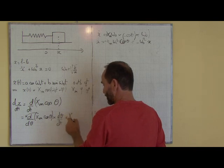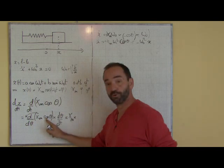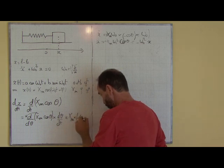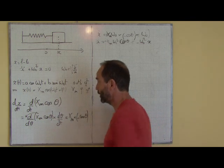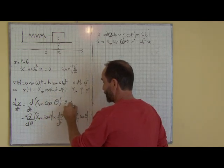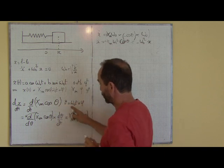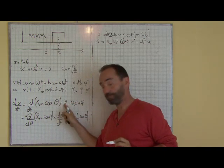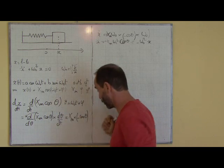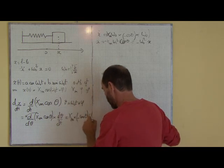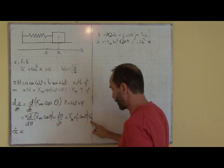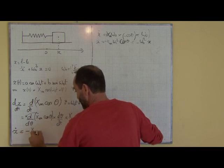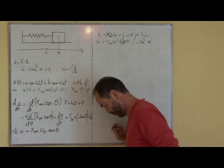La dérivée de cos(θ) par rapport à θ est moins sin(θ), donc on obtient xₘ·(−sin(θ))·θ̇. La dérivée de θ par rapport au temps : θ = ω₀t + φ, ω₀ et φ étant des constantes. Je dérive θ par rapport au temps, je retrouve ω₀. Donc ẋ = −xₘ·ω₀·sin(θ), θ valant ω₀t + φ.